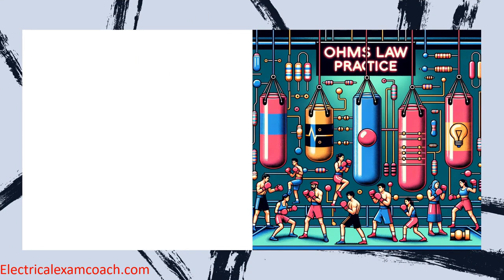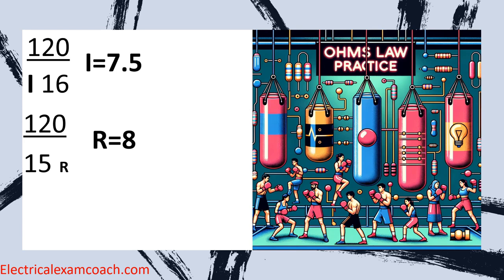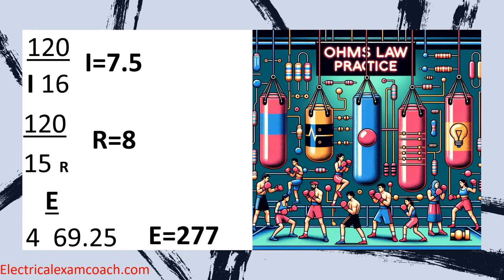Let's do some Ohm's Law practice. First: we have 120 volts and 16 ohms of resistance — what is the current? It's 7.5 amps. 120 divided by 16 equals 7.5 amps. Next: we have 120 volts and 15 amps — what is the resistance? It's 8 ohms. 120 divided by 15 equals 8 ohms. Finally, we have 4 amps and 69.25 ohms of resistance — what is the voltage? We multiply 4 by 69.25 and get 277 volts.